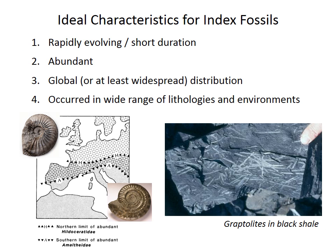What makes a species a good index fossil? First, it should belong to a group that evolves rapidly so that species have shorter durations. Shorter durations permit subdivision of geological time into shorter intervals, which is better for high-precision correlation. Second, index fossils should be abundant. Correlation is one of the important goals of biostratigraphy, so abundant fossils are more likely to be found reliably in multiple places.